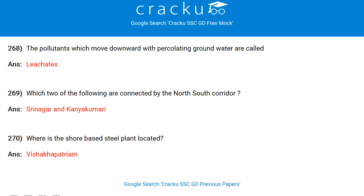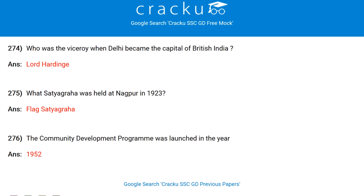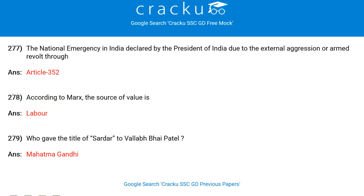The pollutants which move downward with percolating groundwater are called leachates. Which two cities are connected by the North-South Corridor? Srinagar and Kanyakumari. Where is the shore-based steel plant located? Visakhapatnam. The first Indian satellite Aryabhata was launched in 1975. Yosemite is a waterfall. Who established the Indian Civil Liberties Union in 1936? Pandit Jawaharlal Nehru. Who was the Viceroy when Delhi became the capital of British India? Lord Hardinge.